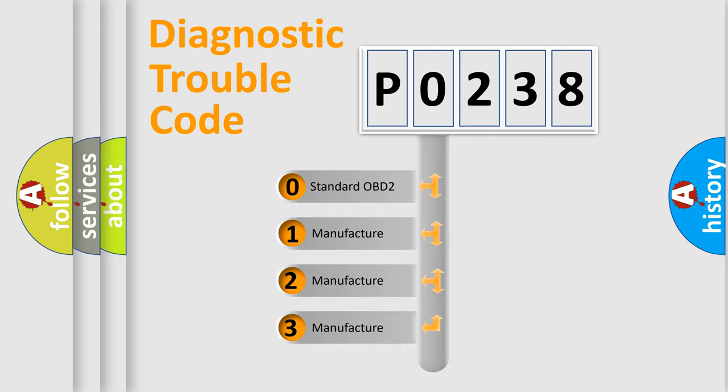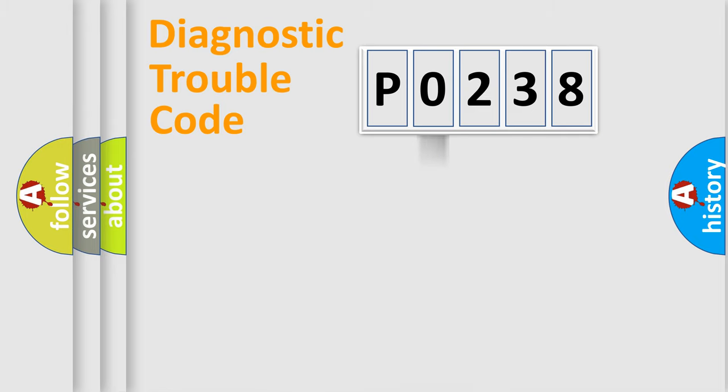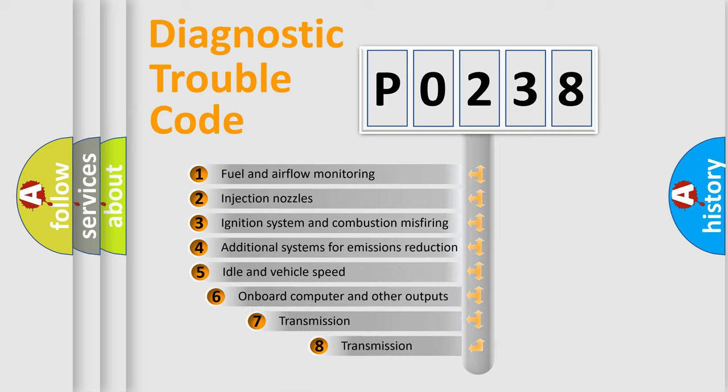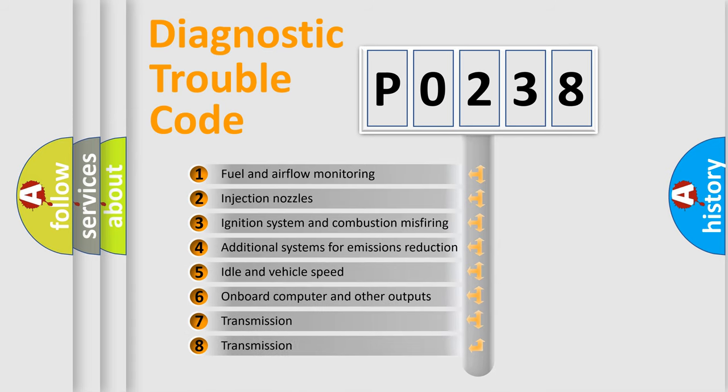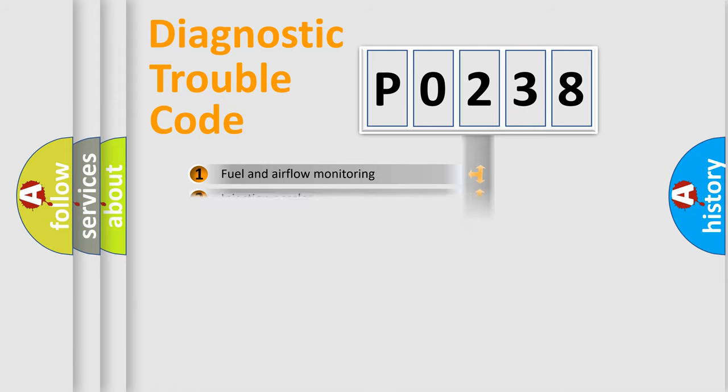If the second character is expressed as zero, it is a standardized error. In the case of numbers 1, 2, 3, it is a manufacturer-specific expression of the car-specific error. The third character specifies a subset of errors. The distribution shown is valid only for the standardized DTC code.